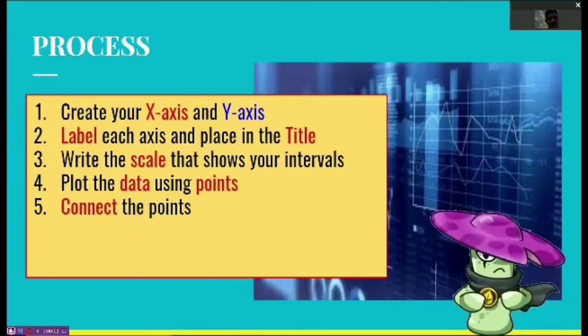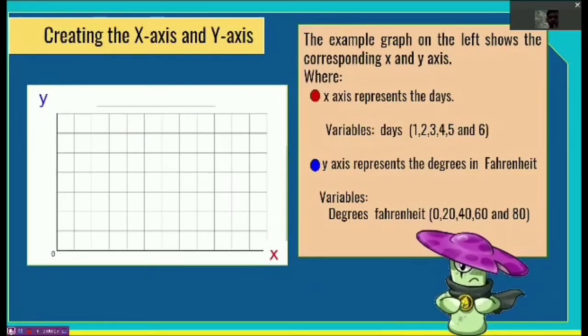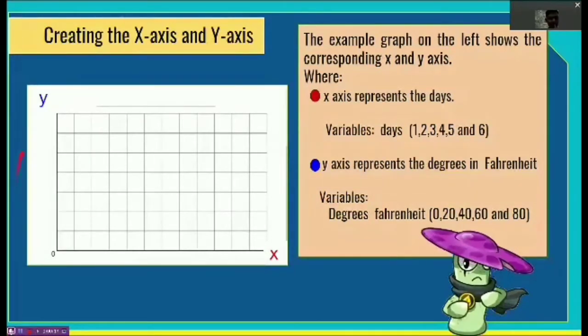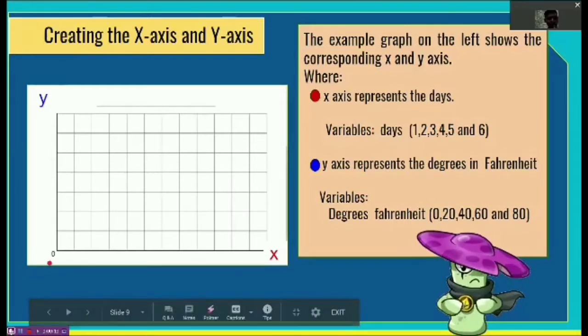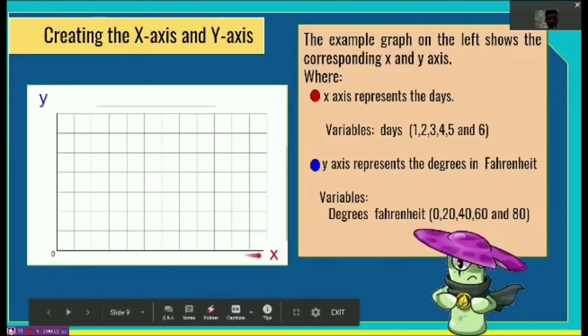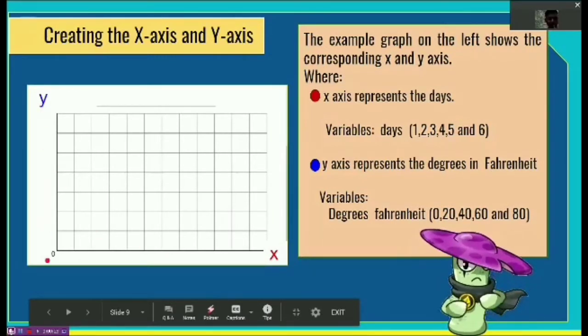So let's go to creating the x-axis and y-axis. This is important. First, we must know where to place the y-axis and the x-axis. Take note that the y-axis always goes on the vertical line, while the x-axis always goes on the horizontal line. The y-axis contains the dependent variables. Meanwhile, the x-axis contains independent variables.